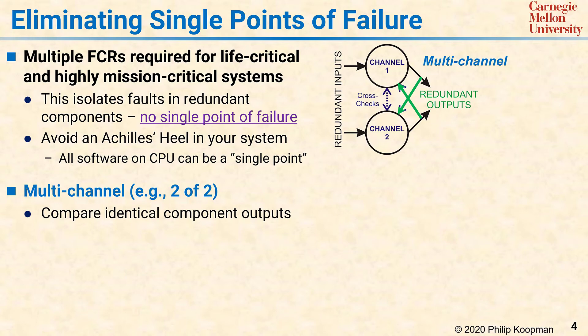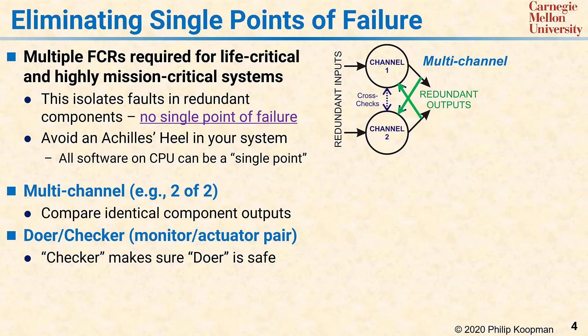Any mismatch between channel outputs indicates a computational failure. A two-of-two architecture can be extremely effective at mitigating hardware faults. However, because the same software is running in both channels, the software must, for practical purposes, be perfect by, for example, developing that software to a high safety integrity level.